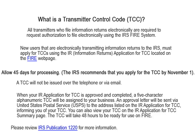The IRS recommends that you apply for the transmitter control code by November 1st. The transmitter control code will not be issued by telephone or email. When your application is approved and completed, a five-character alphanumeric transmitter control code will be assigned to your business. An approval letter will be sent via United States Postal Service to the address listed on the information returns application for the transmitter control code. You can also view your transmitter control code on the information returns application transmitter control code summary page. The TCC will take 48 hours to be ready for use on FIRE.